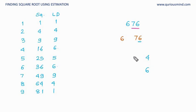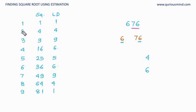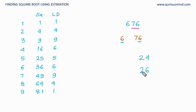Now let us look at the other number, which is 6, and find the closest perfect square that is not greater than 6. The closest square number is 4. The square root of 4 is 2, so the first digit of our square root is going to be 2. This is because the perfect square closest to 6 but not greater than 6 is 4, and the square root of 4 is 2 — that 2 becomes our first digit.